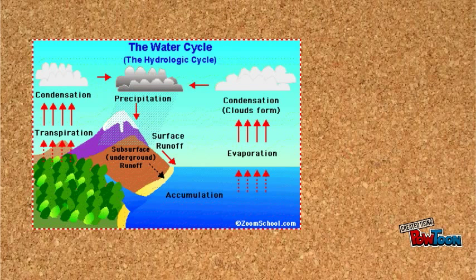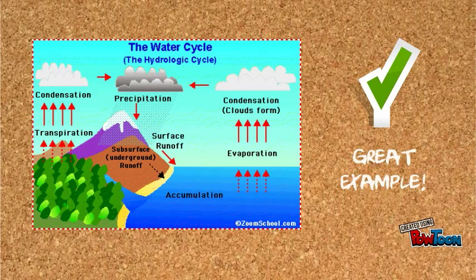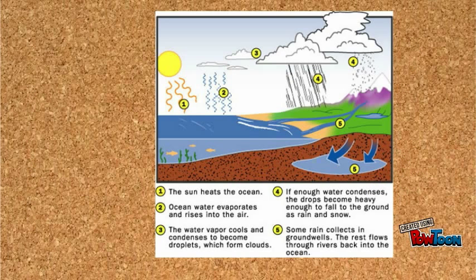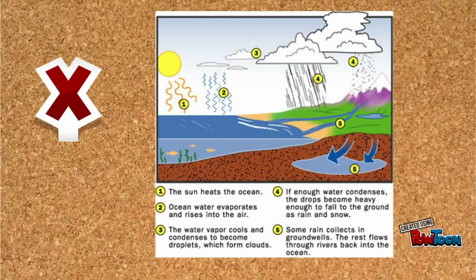Contiguity is used here because the parts of the cycle are placed near the parts to which they correspond. It is not followed here because the labels indicating the water cycle are separated from the actual water cycle.